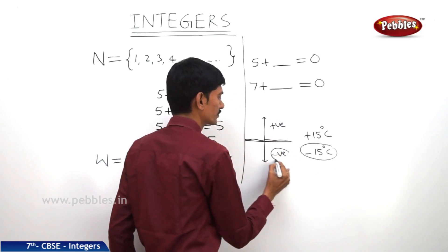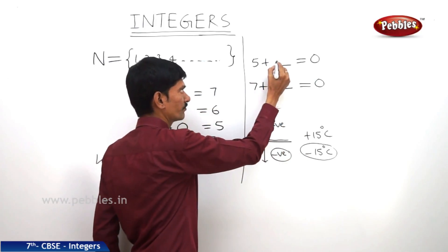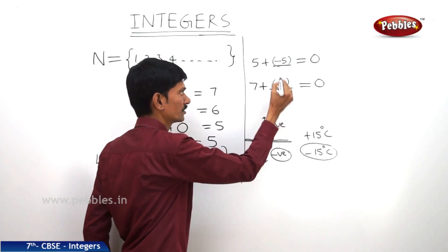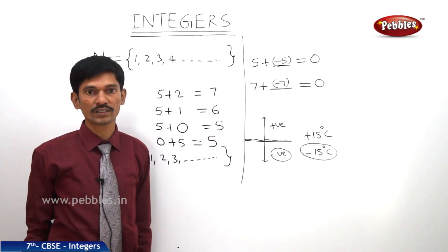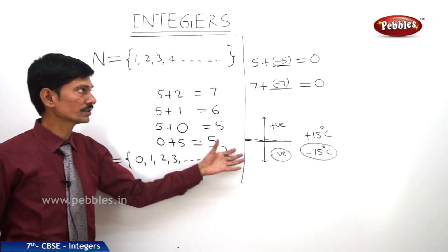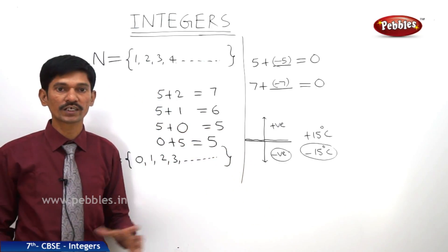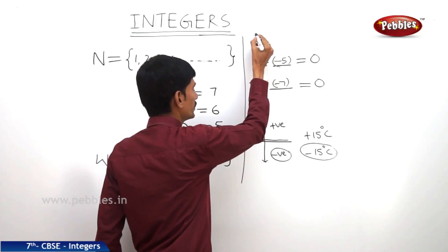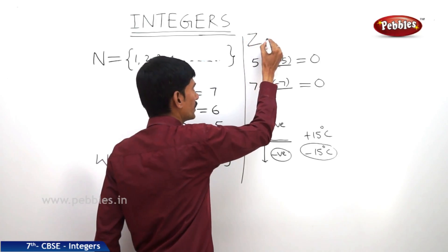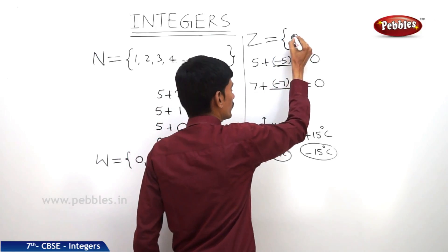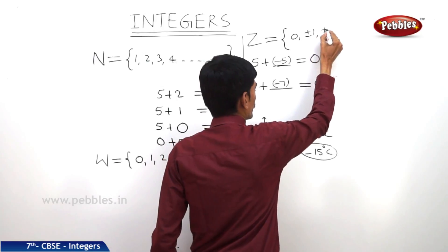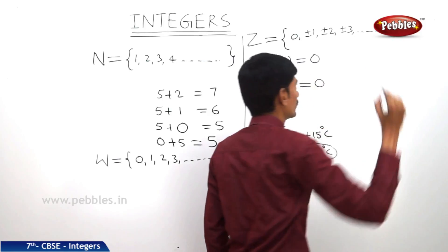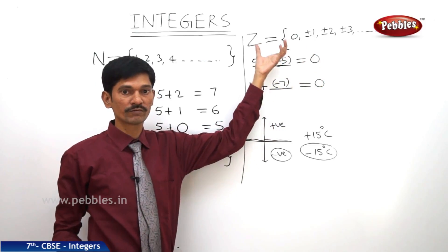These numbers are called negative numbers. So minus 5 should be added to 5 to get the sum 0, and minus 7 should be added to 7 to get the sum 0. If we include negative numbers to the set of all numbers, we get a new set called integers. The set of integers is denoted by Z or I, and equals {0, ±1, ±2, ±3, and so on}, containing positive numbers, negative numbers, and 0.